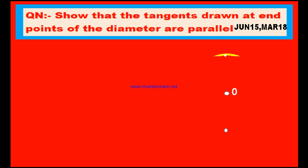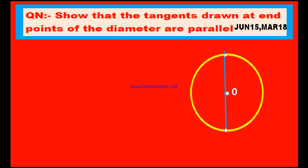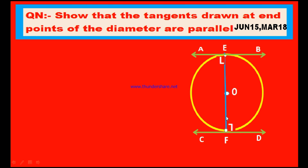Here is the diagram. O is the center of the circle. We have to draw two tangents at both the ends of the diameter. This is the diameter. At one end of the diameter there is a tangent AB, and on the second end there is another tangent CD. The tangent AB touches the circle at E and the tangent CD touches the circle at F. OE and OF are the radii of the circle.